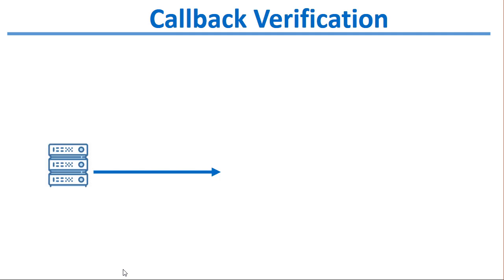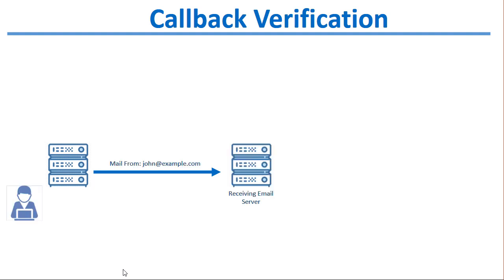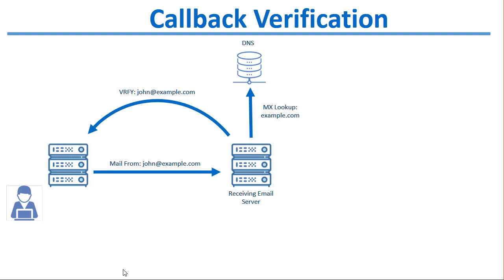Here's how it works. Somebody sends an email to your mail server — say, from john@example.com. Your mail server or gateway, when doing an SMTP callback verification, looks up the MX record of the domain passed in the MAIL FROM command. It connects to DNS, looks for the MX record for the domain — in this case, example.com — and then tries to connect to that mail server listed in the MX record to verify if the account exists on that server.